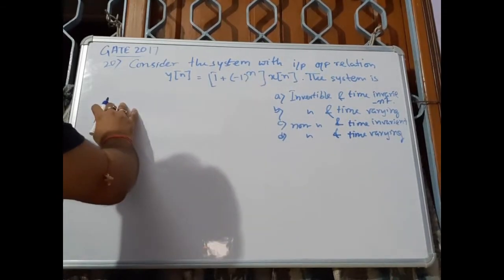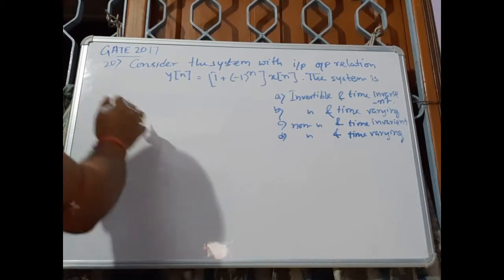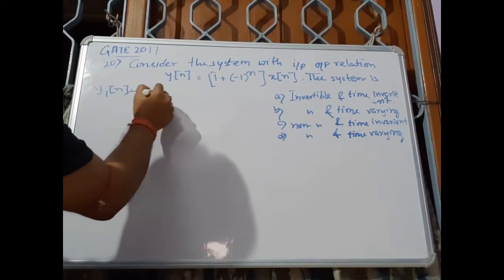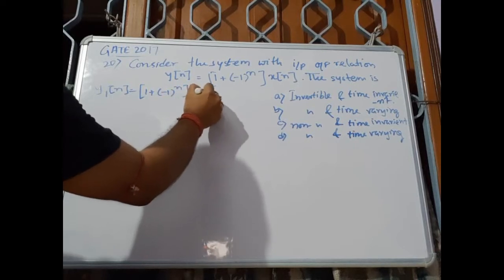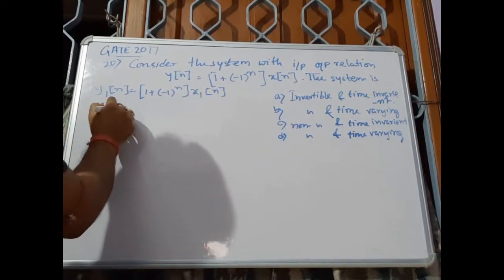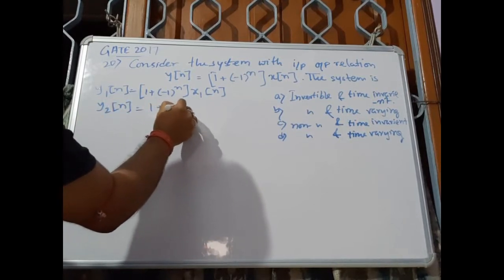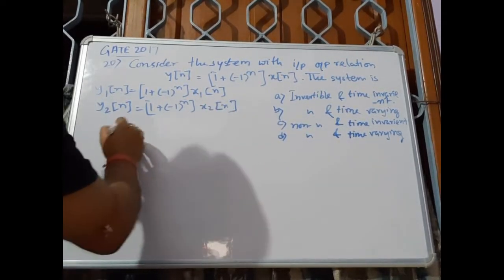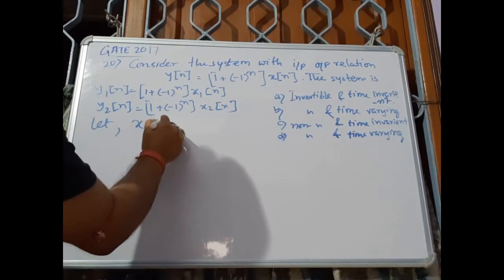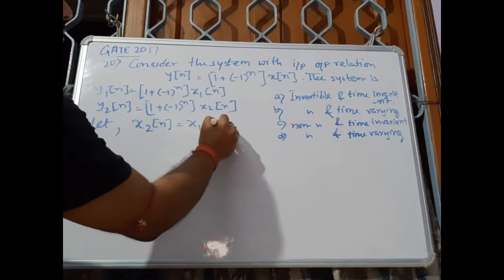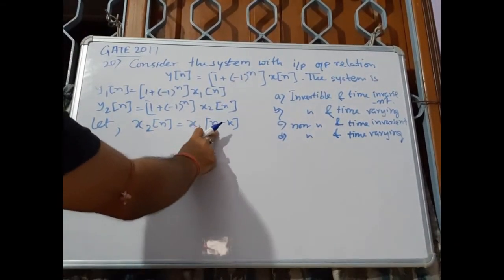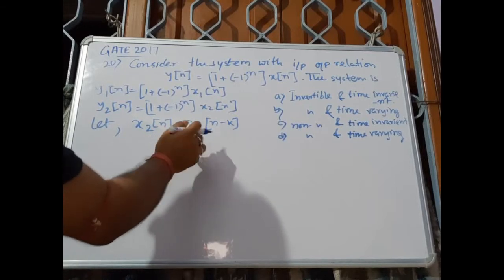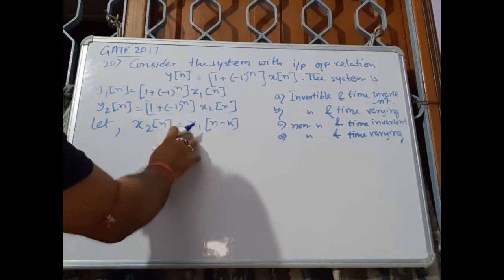For input x1[n] we have output y1[n] = (1 + (-1)^n) * x1[n], and y2[n] = (1 + (-1)^n) * x2[n]. Now let x2[n] = x1[n - k], so we are just shifting the time or sample of x1.